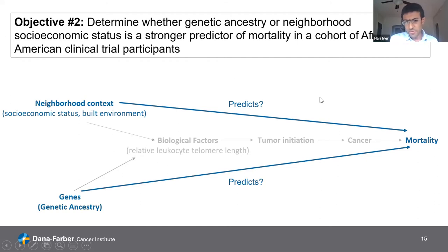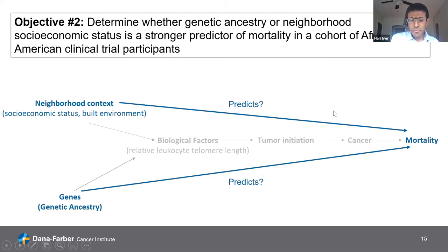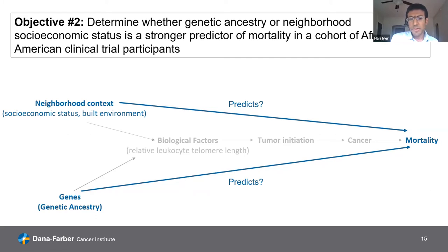We're switching gears quite dramatically now. The goal of this second project was to determine whether genetic ancestry or neighborhood socioeconomic status was a stronger predictor of mortality in a cohort of African-American trial participants. The motivation is that in the cancer space, there's growing interest to recruit more diverse populations in clinical trials, because it's important to have a wider diversity of participants and genetic markers that might be associated with treatment patterns.